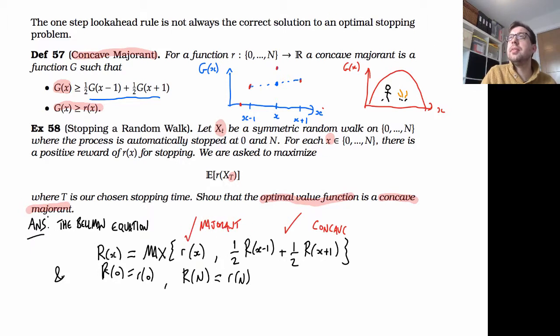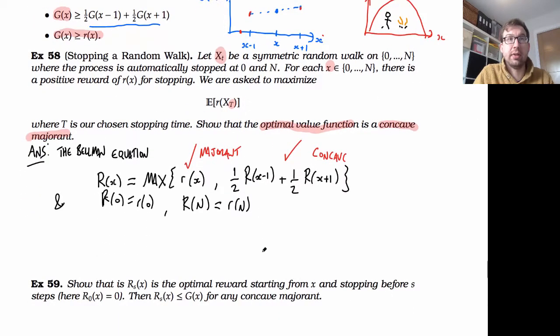From the form of this Bellman equation we can see immediately that the optimal value function is a concave majorant. The condition R*(x) ≥ (1/2)R*(x-1) + (1/2)R*(x+1) gives us concavity, and R*(x) ≥ r(x) gives us the majorant property. Both conditions are satisfied, so the optimal value function is indeed a concave majorant.